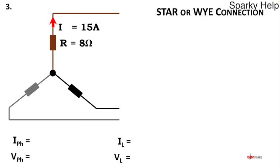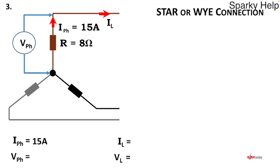Question three was given the current and the resistance — work everything out. Before we do that, let's identify what each thing is. That current is already given — it's in the phase of the resistor, so around the corner must be il. If that one's il then this one is ip, so we can put in ip = 15 amps. The phase voltage is from the star point to the end of the resistor — that is v-phase. Therefore the other one must be vl, shown between l1 and l2.